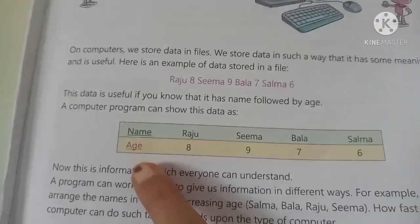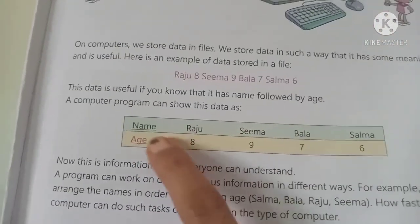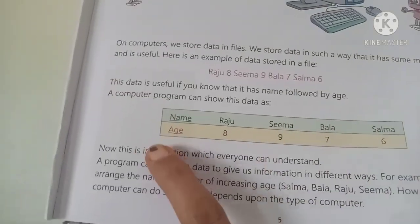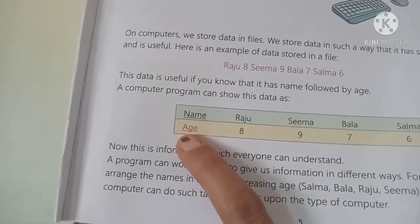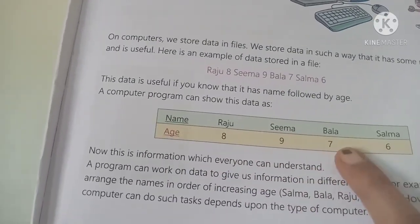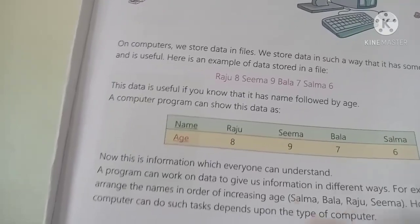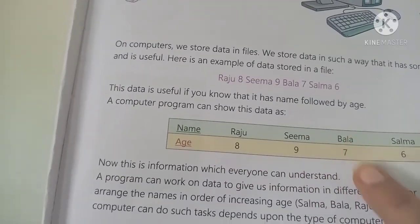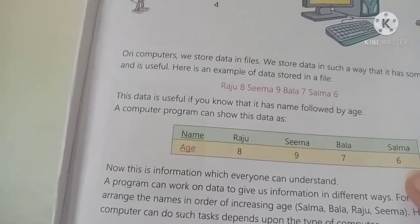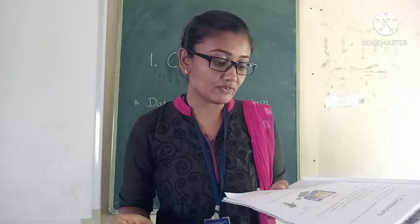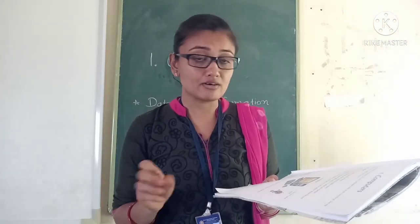Here is a table with names — Raju, Seema, Balak, Salman — and their ages: 8, 9, 7, 6. So Raju is age 8, Seema is 9, Balak is 7, and Salman is 6. Now this is information which everyone can understand.